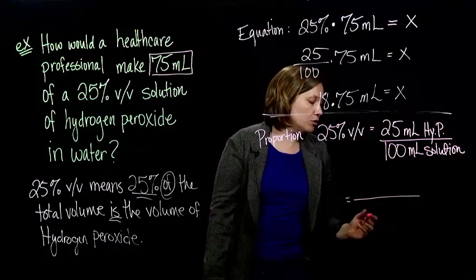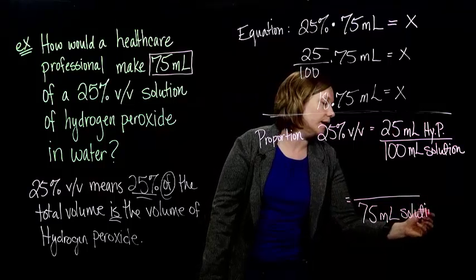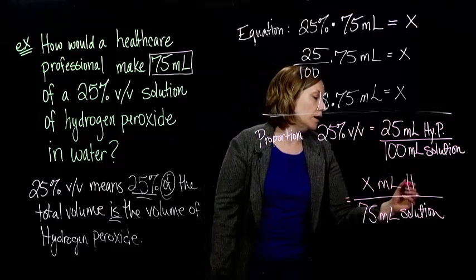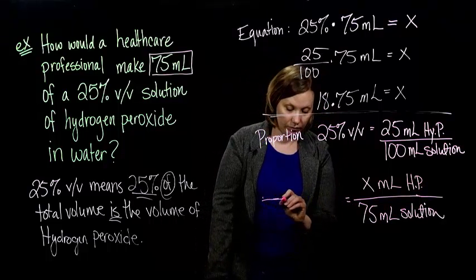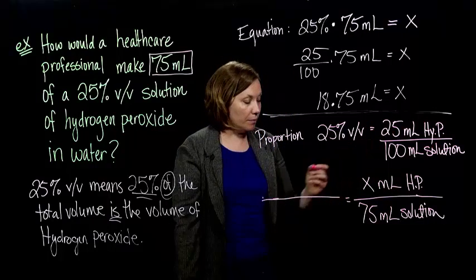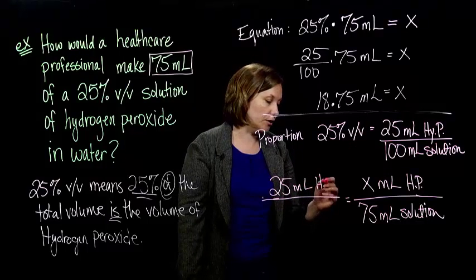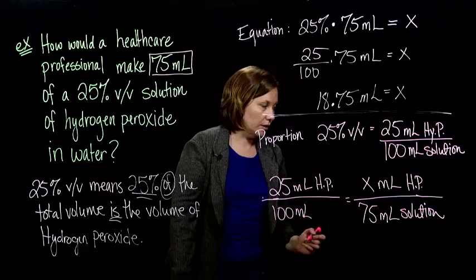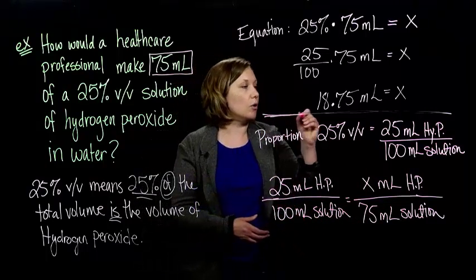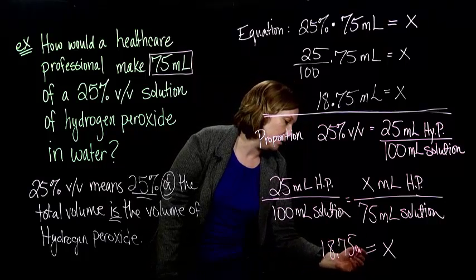If I'm making a new solution where I want my total volume to be 75 milliliters of solution, right, to figure that out I need to know the amount of hydrogen peroxide, the milliliters of hydrogen peroxide. And we know that it has to be in proportion to 25 milliliters hydrogen peroxide per 100 milliliters of solution. And then we can go ahead and solve this proportion just like you would normally, and you will find your X equals 18.75 milliliters.